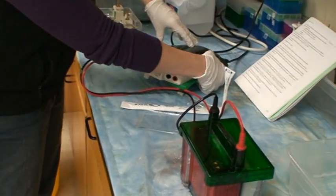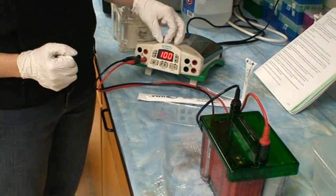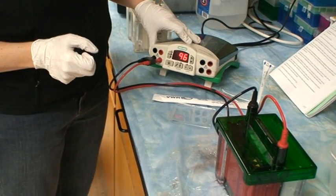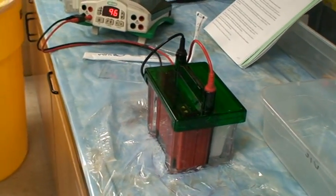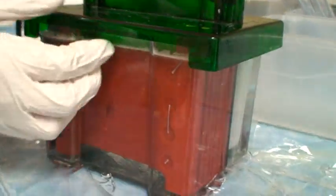So turn your power source back on. Hit volts. Make sure it's set to 100. And hit the little running man. And then you want to look at your transfer to see if you can see any bubbles forming.